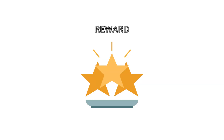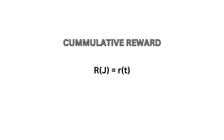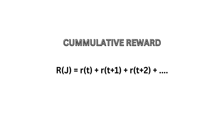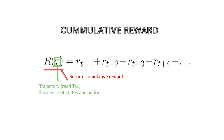The reward is a result of actions and feedback. This leads to the term cumulative reward. The agent takes an action in one state and receives reward R of T. Then the agent takes an action in the next state, receiving reward R of T plus 1, and so on. A trajectory is a full sum of rewards — that's our cumulative reward, denoted R of Tau, where Tau denotes a trajectory.